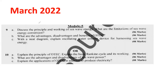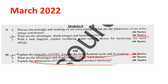Looking at the first OTEC question: what are the advantages and disadvantages of Ocean Thermal Energy Conversion? You'll be getting 6 marks. Similarly, explain the OTEC and explain the basic Rankine cycle and its working — that also carries 6 marks. Then, explain the applications of OTEC in addition to producing electricity. These are easy questions.